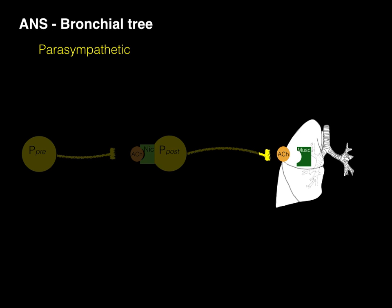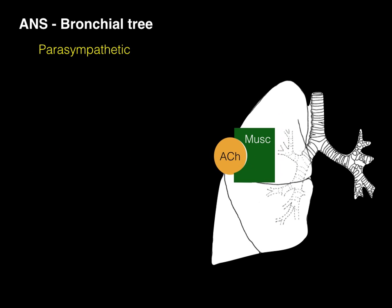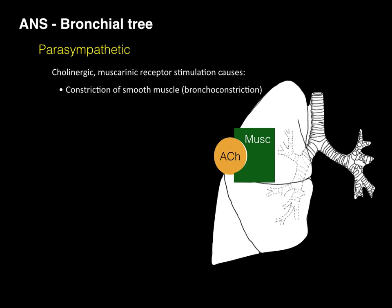Acetylcholine is going to bind to a cholinergic receptor, but in the case of the lungs, it binds to a muscarinic receptor, which then causes bronchoconstriction. Specifically, cholinergic muscarinic receptor stimulation causes constriction of the smooth muscle — bronchoconstriction — and also increases mucus secretion.